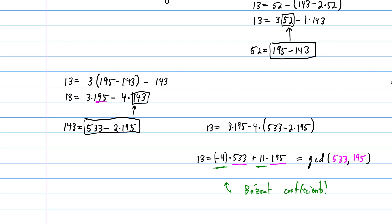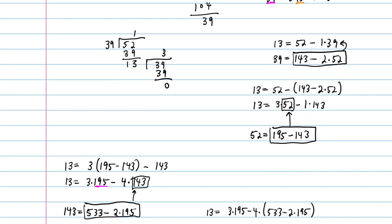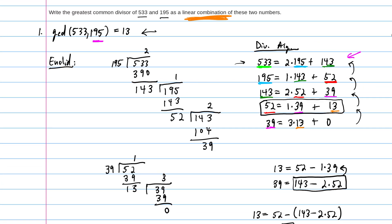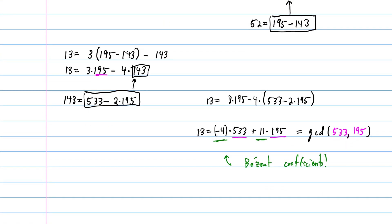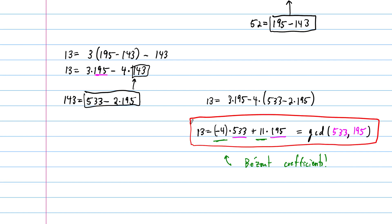So this is done by first applying the Euclidean algorithm to get the GCD, and then back solving — plugging in and substituting — to express 13 as a linear combination of the original numbers. We didn't need the last line of the algorithm; from the rest, we solved for each remainder individually and worked our way back up to get the final statement: the GCD expressed as a linear combination of the original numbers 533 and 195.